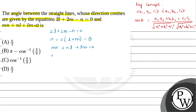Taking N common from the first two terms of the second equation gives N(L + M) plus LM equals 0. From equation 1, we have the value of N, so we substitute 2(L + M) in place of N(L + M), giving 2(L + M)² plus LM equals 0.